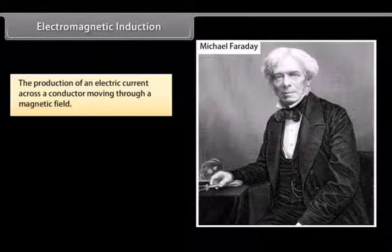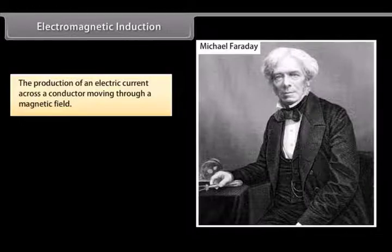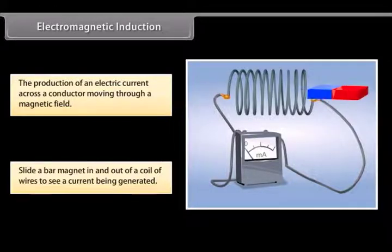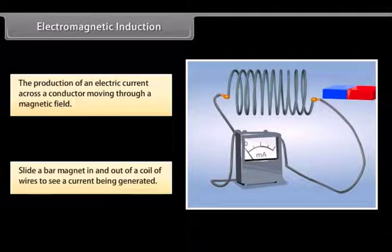Michael Faraday was a British scientist, chemist, physicist, and philosopher who discovered the magnetic field, electromagnetic induction, diamagnetism, and electrolysis. His experiments included the discovery of generating currents by moving a magnet. Let us try sliding a bar magnet in and out of a coil of wires. You see that the wires generate a current. This is known as electromagnetic induction.